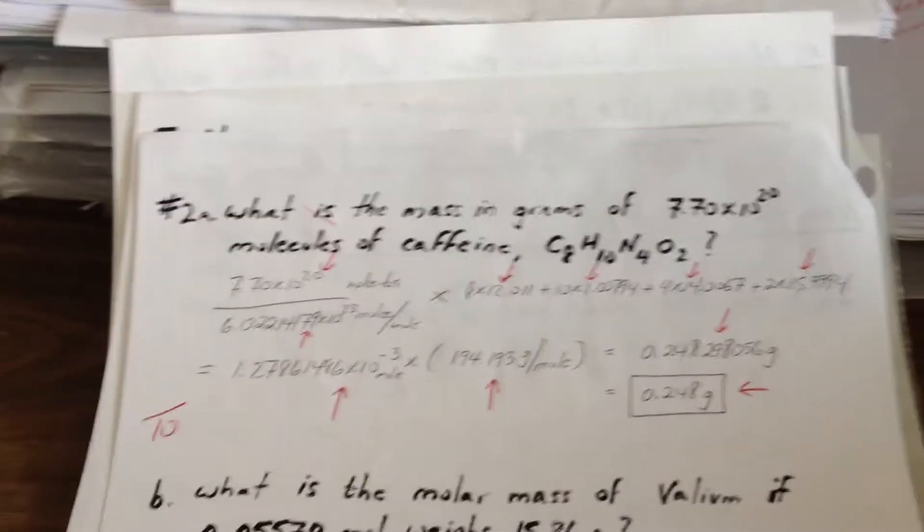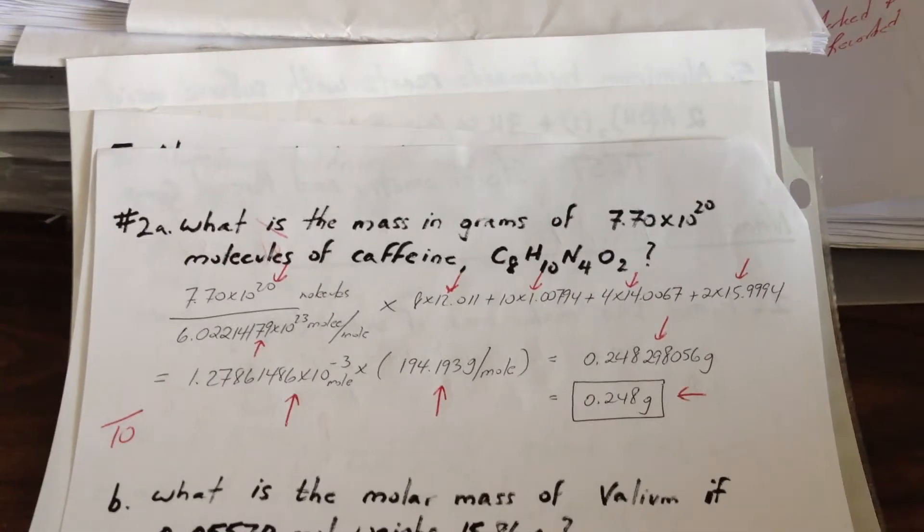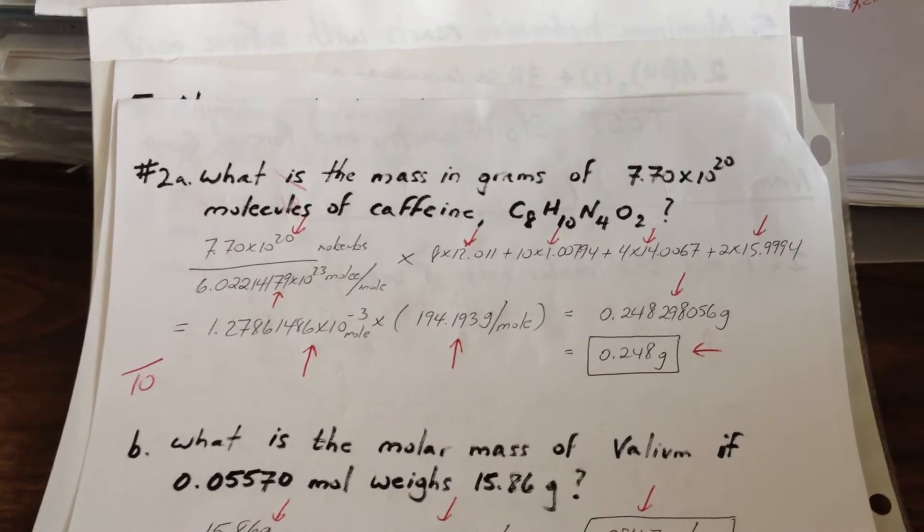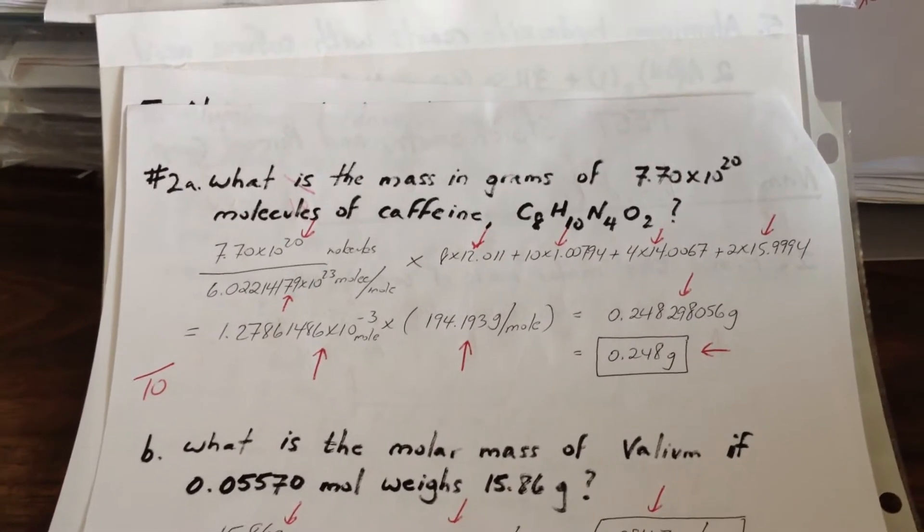Question 2A, what is the mass in grams of 7.7 times 10 to the 20 molecules of caffeine with the formula C8, H10, N4O2?